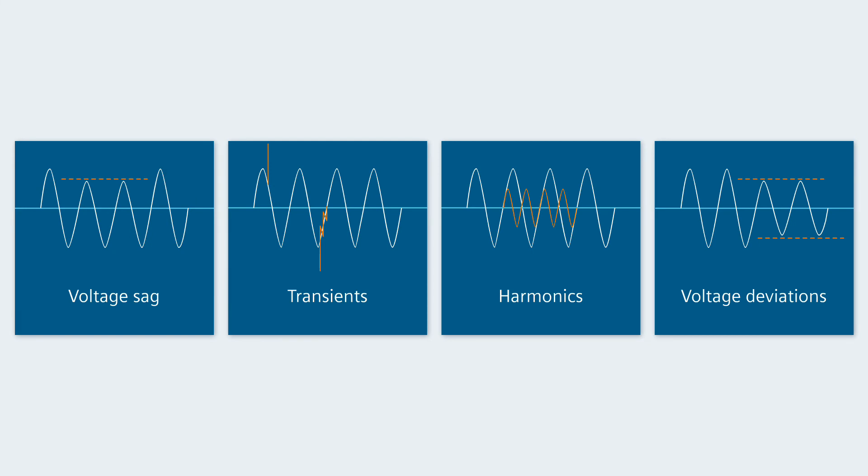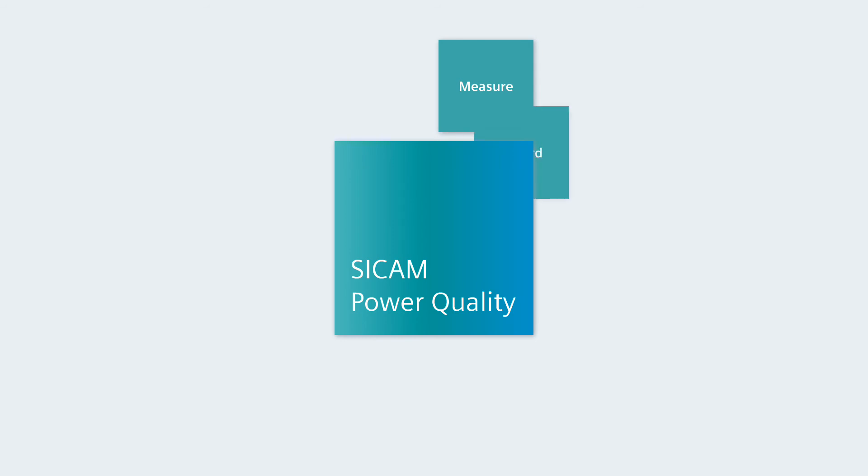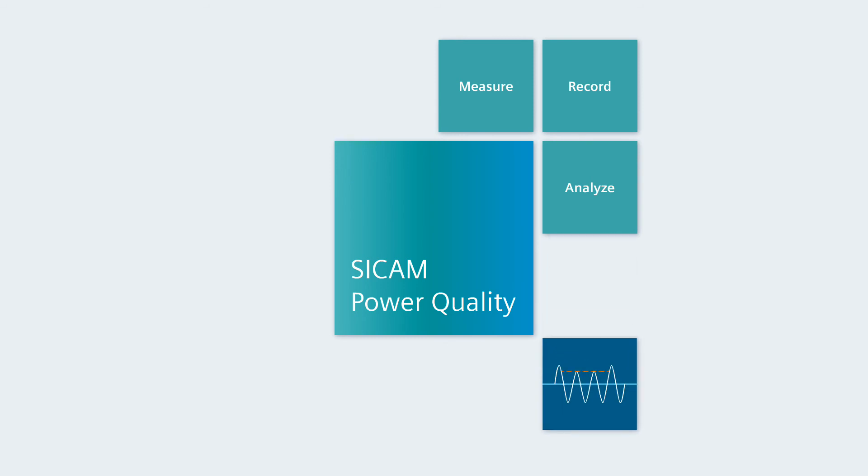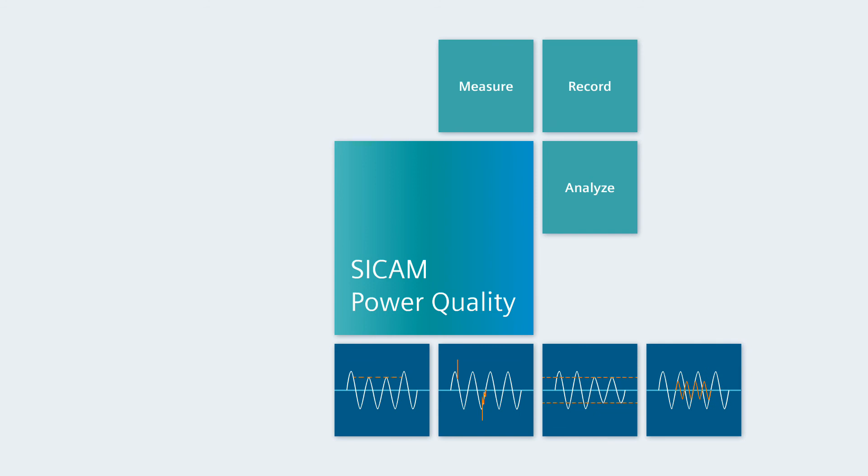Products of the SICAM Power Quality family enable you to get a handle on all of the described interferences. SICAM Power Quality devices measure, record, and analyze current voltage curves. Analysis makes interferences in your processes visible and understandable.